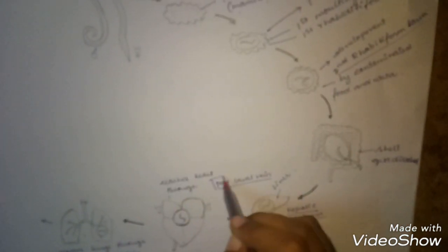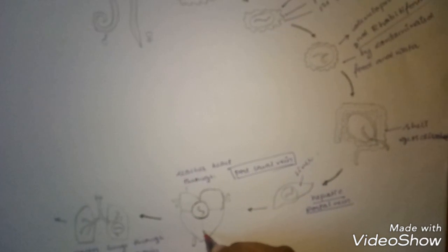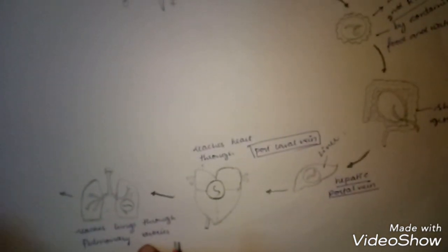It reaches the liver via the hepatic portal vein. From the liver, it reaches the heart through the postcaval vein. From the heart, it reaches the lungs through the pulmonary arteries.